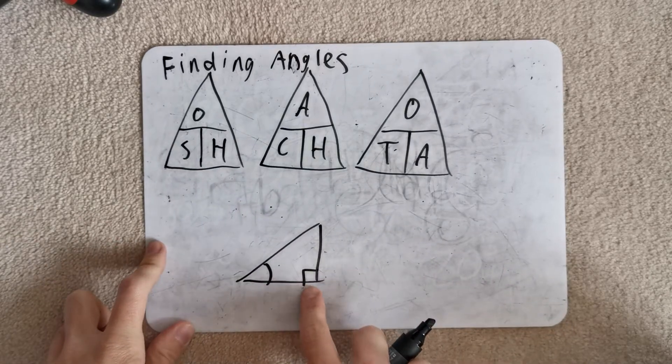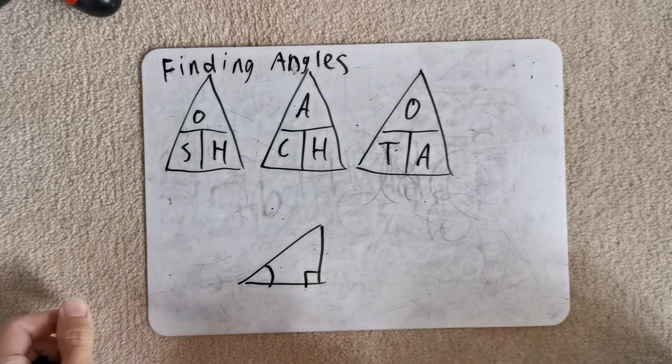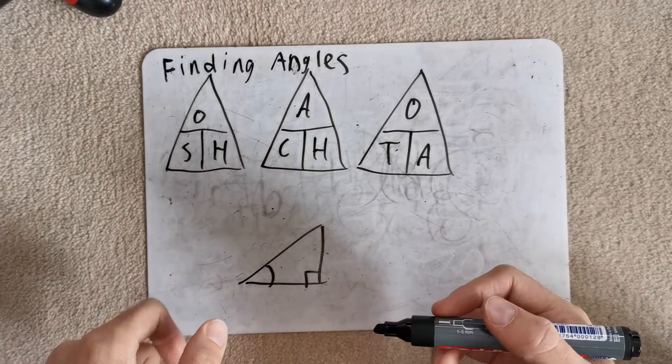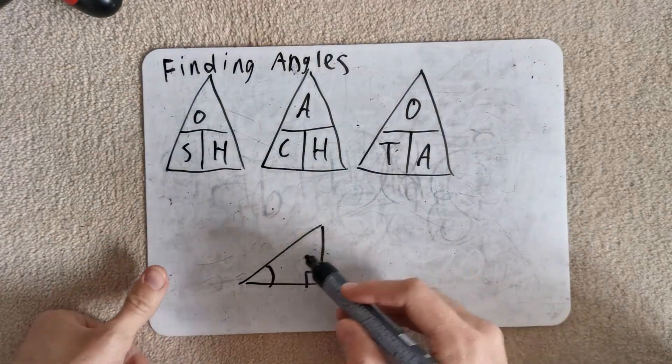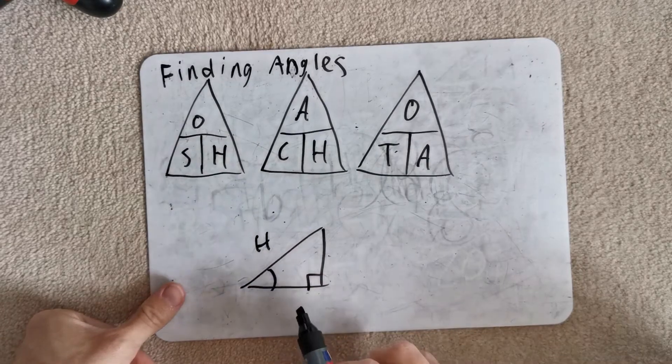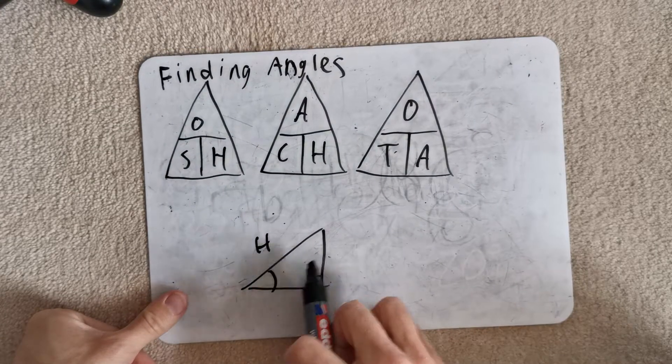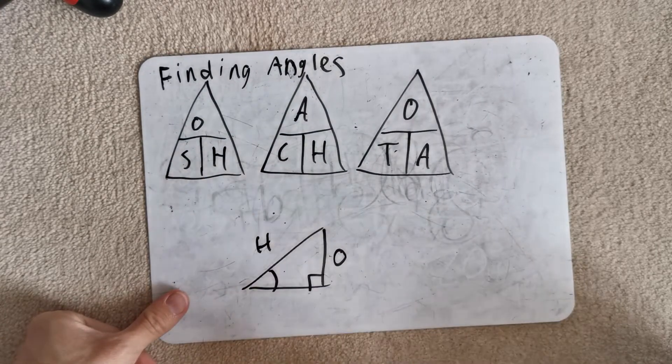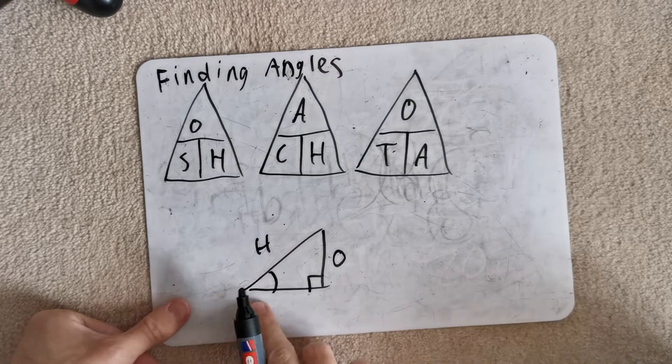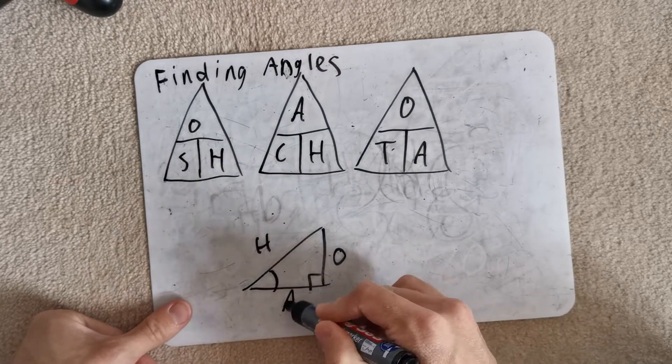With the right angle triangle, all the sides have a name. Just a quick recap. The longest side is the hypotenuse. The side that is opposite the angle is the opposite and the side that is next to both of the angles is the adjacent.